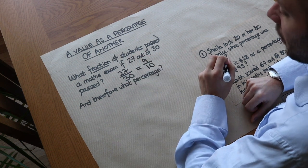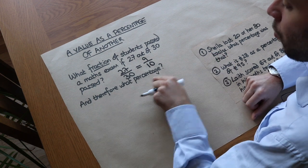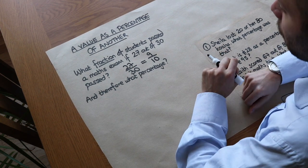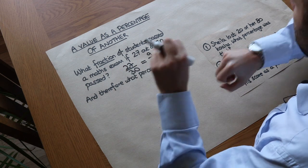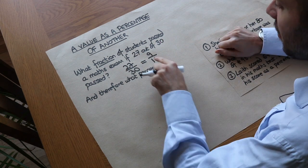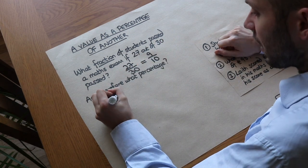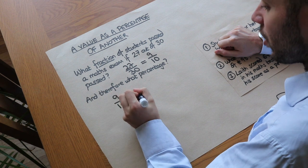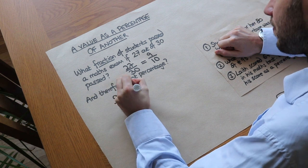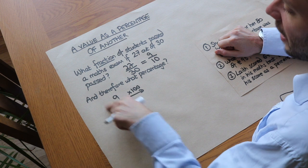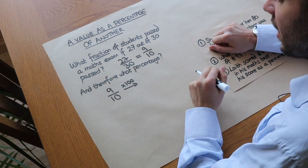So 9 tenths of the students passed, and therefore what percentage? Well, we know from the video on converting between fractions, decimals, and percentages that to convert a fraction to a percentage we multiply it by 100, or this is one of the simpler fractions that we should just know what percentage it is.